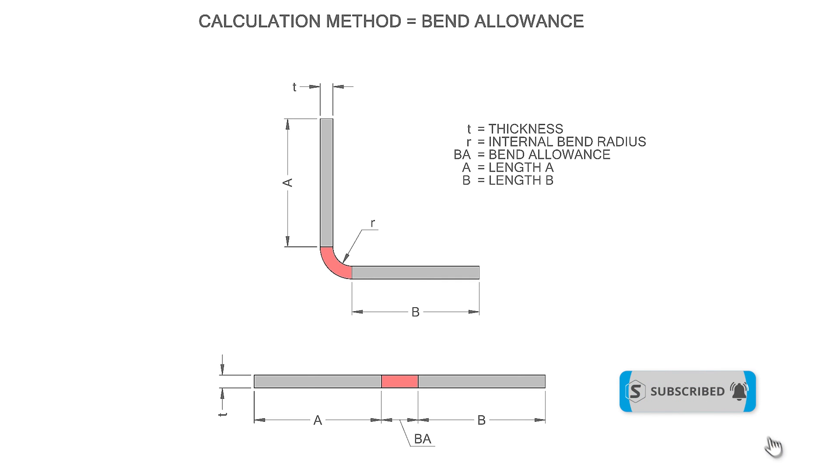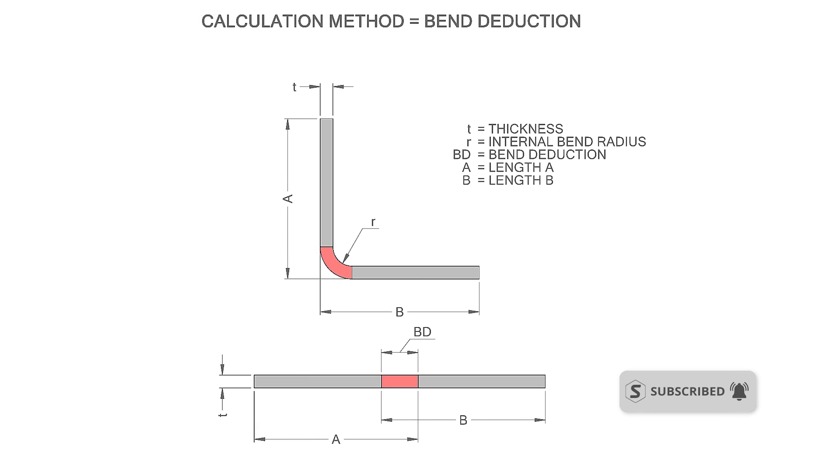In a similar way to bend allowance, a bend deduction calculation uses the sum of the straight lengths A and B, this time including the bend region, then subtracts the bend deduction value.